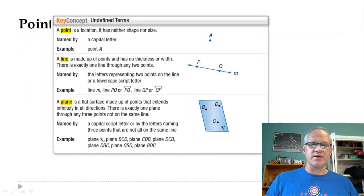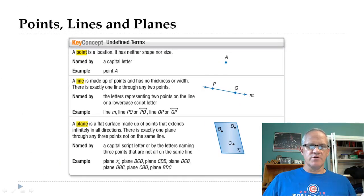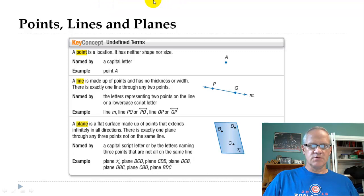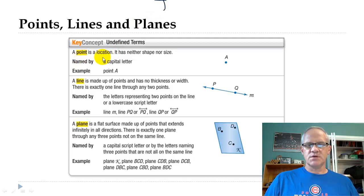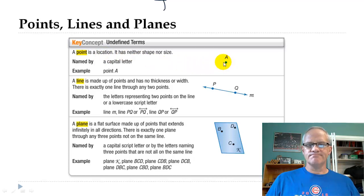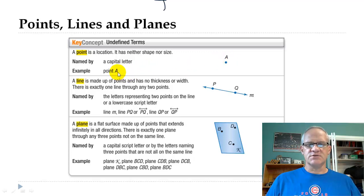First of all, points, lines, and planes. A point is just a location. Technically, it doesn't have a shape or a size. How we indicate a point in geometry is we just draw a little dot and we name it with a capital letter. You see here that this has the capital letter A written by it, and so we would call that point A. That's all it is.